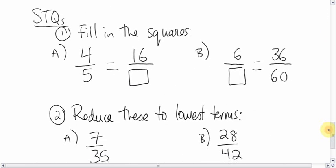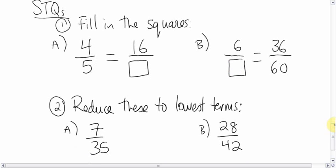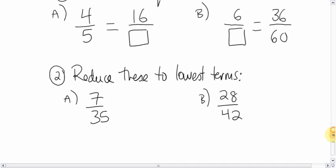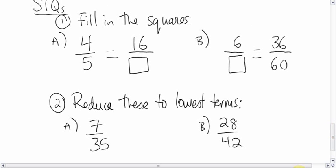So here are your skill testing questions. If you could fill in the squares there and there, one A and B, and then reduce these two questions to lowest terms. Alright. Thank you very much. Talk to you later. Bye.